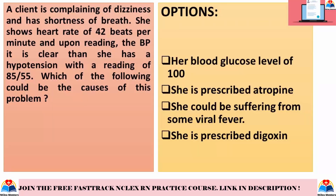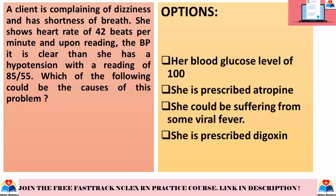A client is complaining of dizziness and has shortness of breath. She shows a heart rate of 42 beats per minute, and upon observation of the BP, it is clear that she has hypotension with a reading of 85/55. Which of the following could be the cause? Options: blood glucose level of 100; she is prescribed atropine; she could be suffering from a viral fever; she is prescribed Digoxin. The correct answer is the last option — she is prescribed Digoxin. Certain drugs such as Digoxin cause bradycardia, and symptoms like dizziness, shortness of breath, and hypotension are consistent with bradycardia.